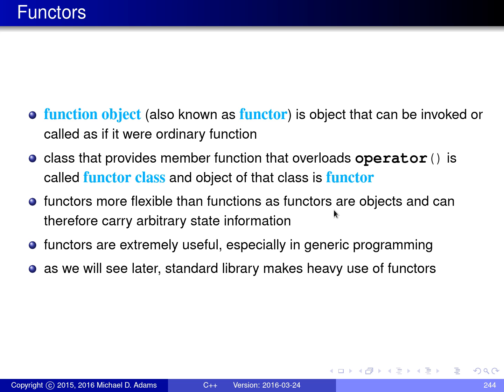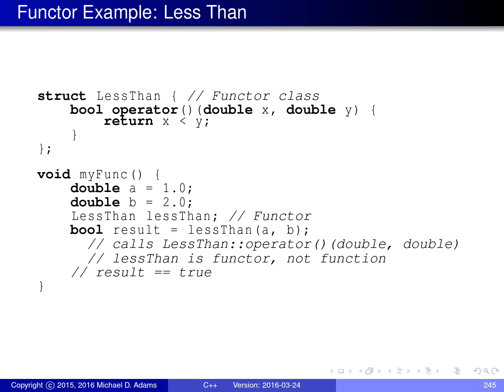As we'll see later, the standard library makes very heavy use of functors. On this slide, we have an example of a functor class called less_than. What makes this a functor class is that it overloads the function call operator using the member function operator round brackets. It overloads it with two double parameters, denoted by x and y.